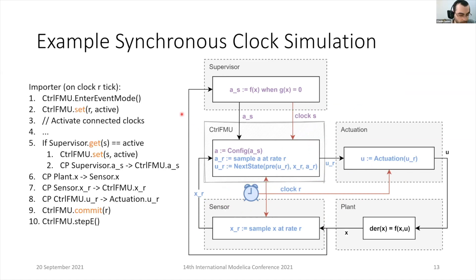Let's go over quickly a simple example of an algorithm that would solve this scenario. Here, let's assume clock R is about to tick. And that's why the control FMU goes into event mode, is pushed into event mode by the importer. The importer activates the clock R.